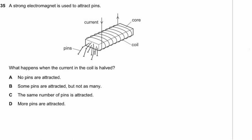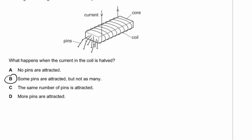Question 35. When the current in an electromagnet's coil is halved, the magnetic field gets smaller and the magnet is less powerful. It's still a magnet but attracts fewer pins — some pins are attracted but not as many as before. The answer is B.